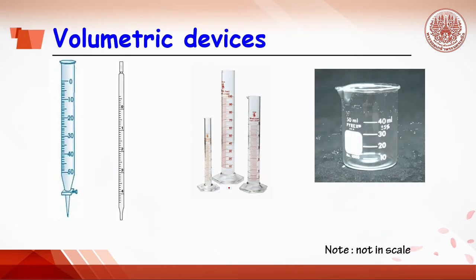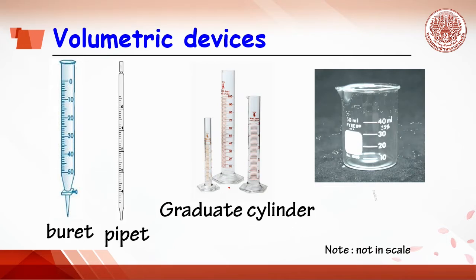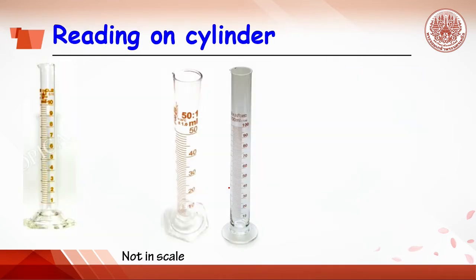When volumetric devices such as burette, pipette, cylinder, and beaker are used, how do you report data with significant figures? The answer is to determine the device scale. For example, reading on the graduated cylinder.